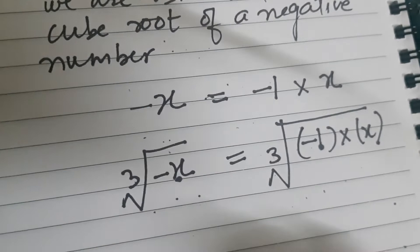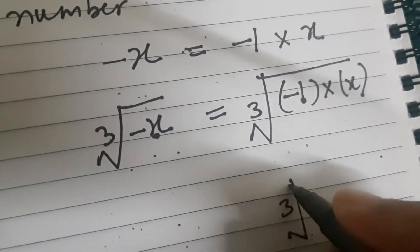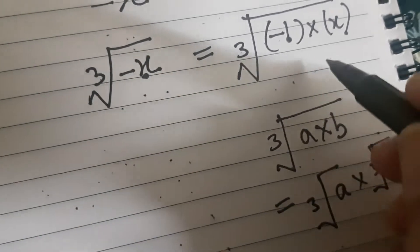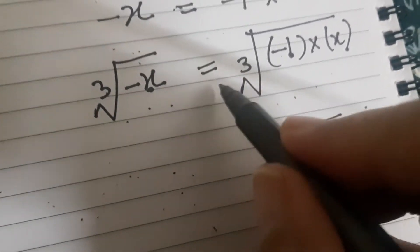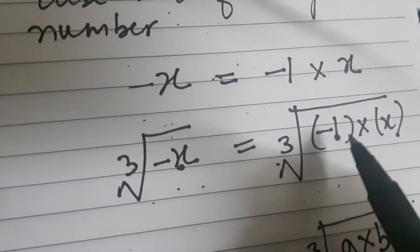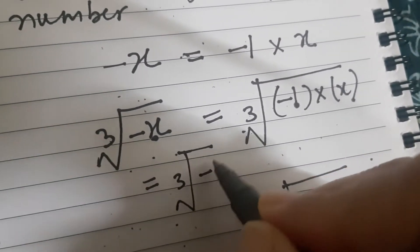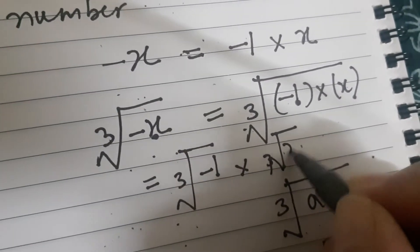Now we know that cube root of a into b is equal to cube root of a into cube root of b. Using this, I can write cube root of minus 1 into x is equal to cube root of minus 1 into cube root of x.